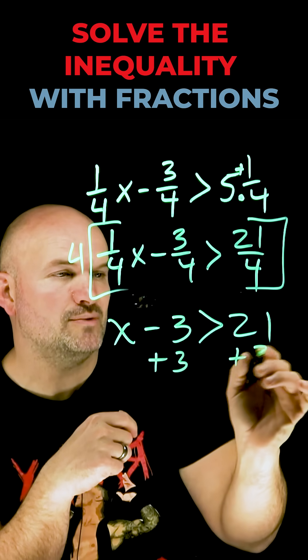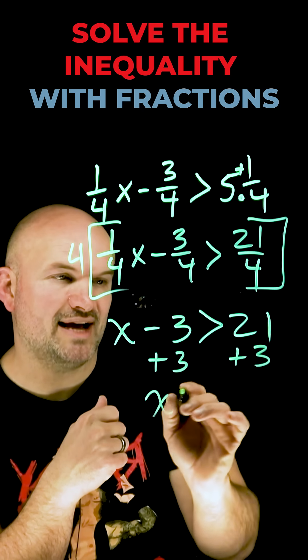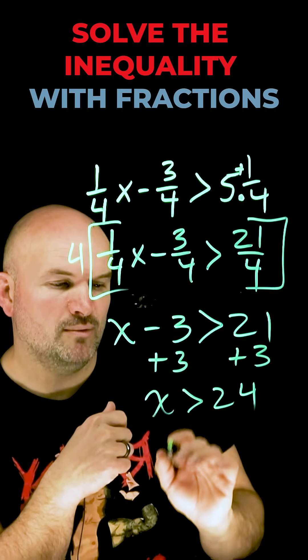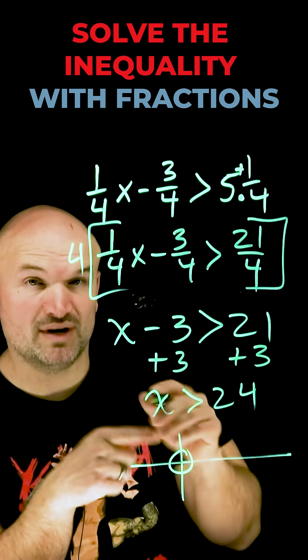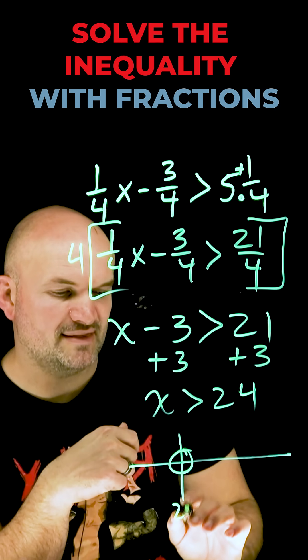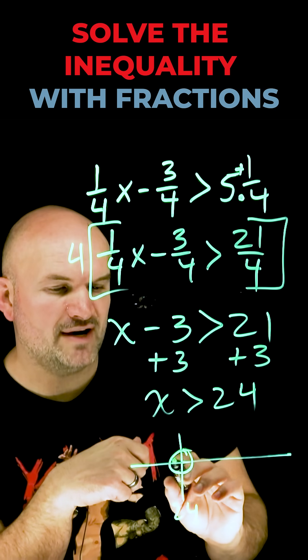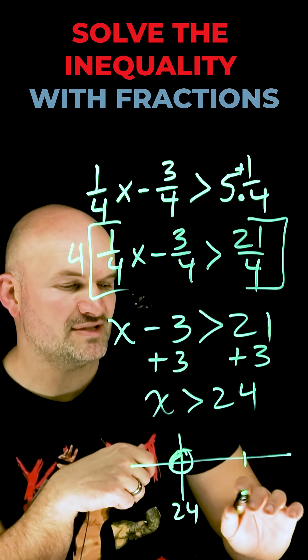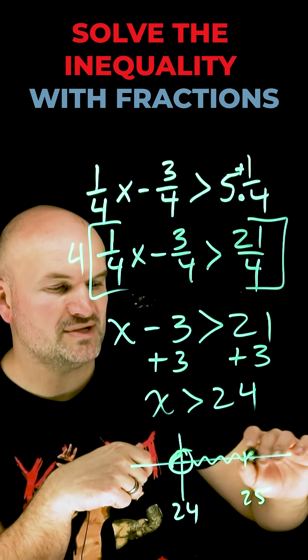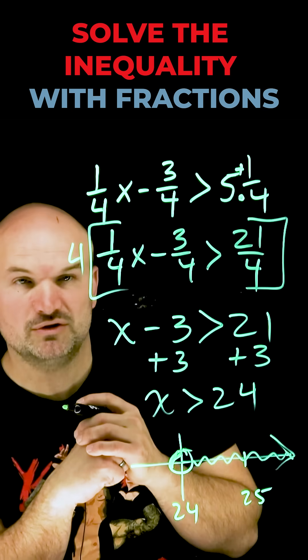Whatever I do on one side, I have to do on the other side. I'm now left with x is greater than 24, which I can write on a number line here with an open circle because 24 is not included. So that is the value 24, and then all values to the right, for instance like 25 and all other numbers, represents our solution.